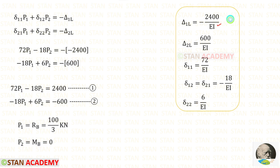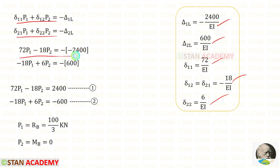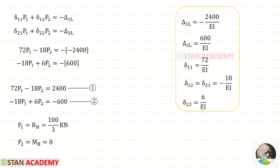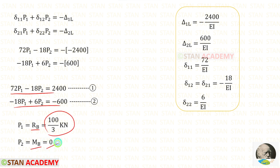We have found all of the displacements. Applying them in the two equations, we can solve using a calculator. For RB we will get 100/3 kN, and for MB we will get 0.